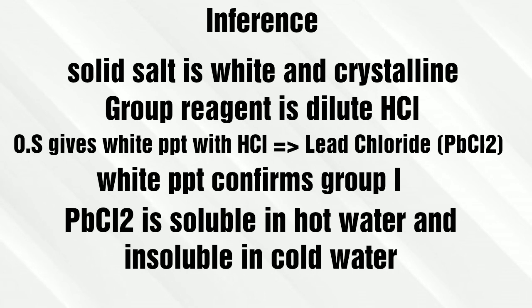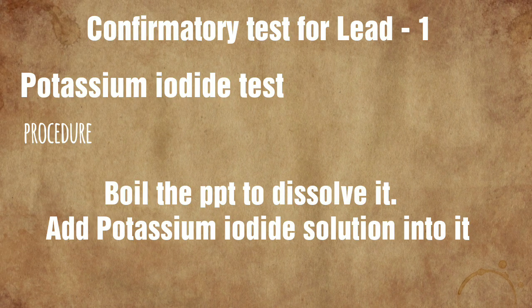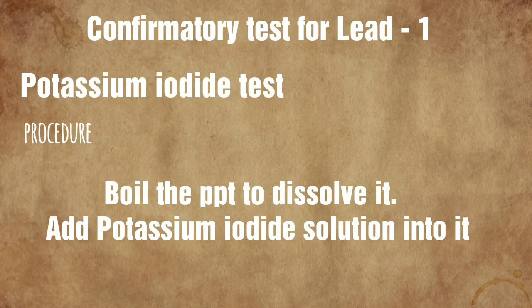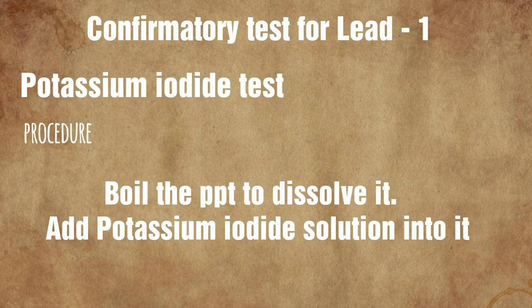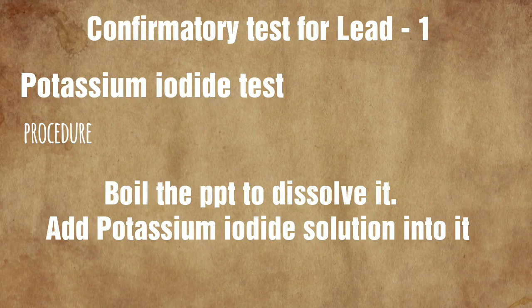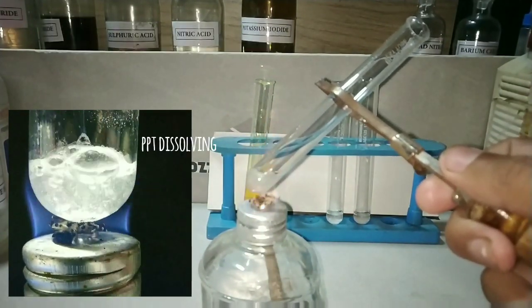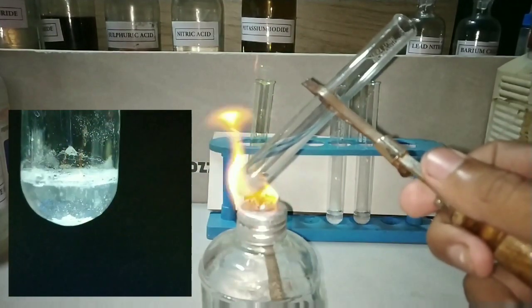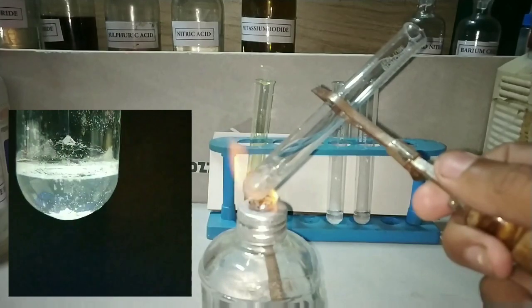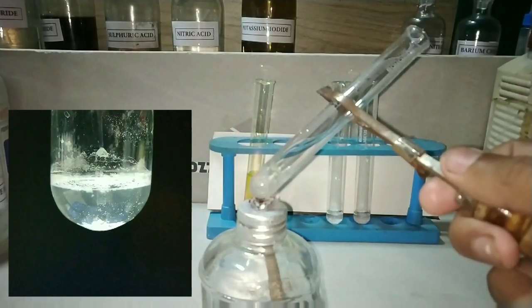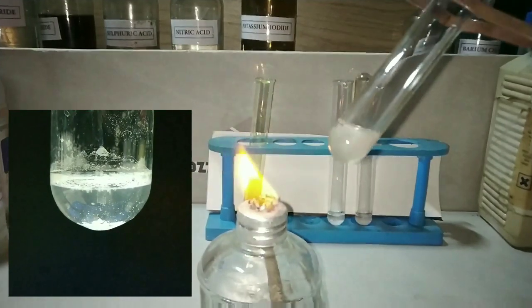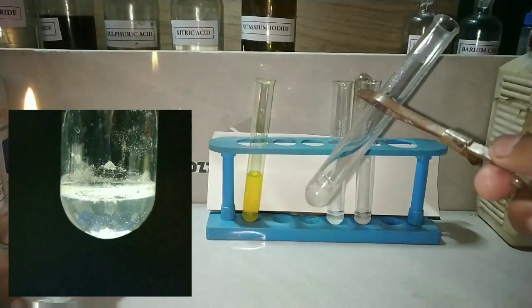The original solution gave us a white precipitate of lead chloride. Lead chloride is soluble in hot water and insoluble in cold water. The first confirmatory test is the potassium iodide test, where we boil the precipitate to dissolve it and then add potassium iodide solution. On boiling, the precipitate is dissolving and the solution has turned clear.